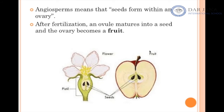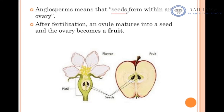The word 'angiosperm' comes from the meaning that the seed is enclosed in a chamber. In angiosperms, their seeds are inside a fruit. 'Angio' means chamber, and 'sperma' means seed — so angiosperms means seeds inside a chamber.